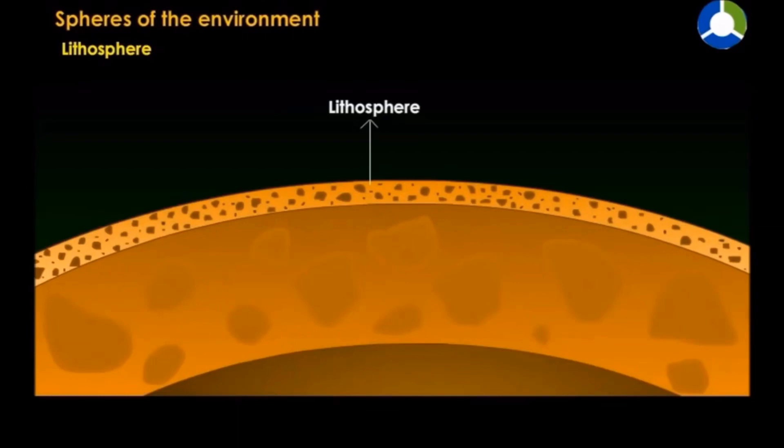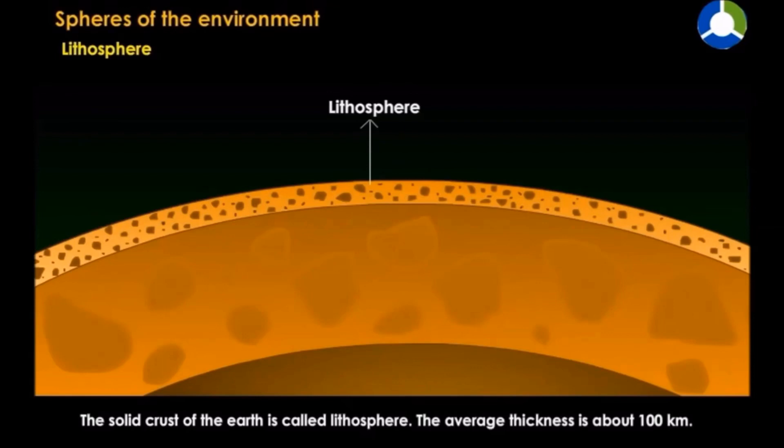Now next is lithosphere. Lithosphere is the solid crust of the Earth and the average thickness is about 100 kilometers. The lithosphere includes rocks, soil, sand, stone, plants, etc. The surface of the lithosphere is very uneven—it constitutes high mountains, flat areas, and deep valleys.